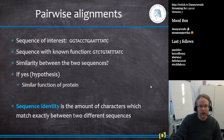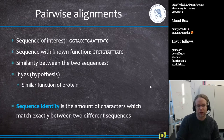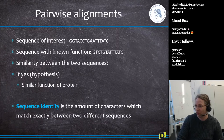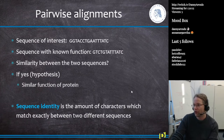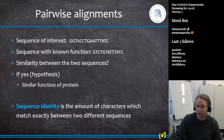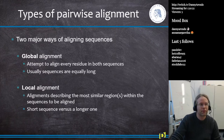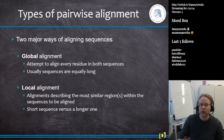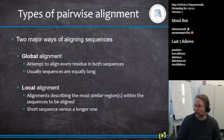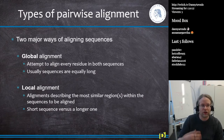Here we have the concept of sequence identity. Sequence identity is the amount of characters which match exactly between two different sequences. It's just a number — not a percentage. There are two major ways of aligning sequences together: global alignment and local alignment.